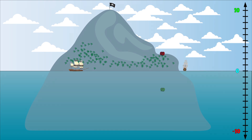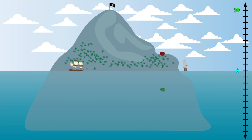10 and negative 10 are both 10 units away from zero. The flag posted at the top of the island is located at an elevation of 10, which is 10 units above sea level. The very bottom of the island is located at a depth of negative 10, which is 10 units below sea level.